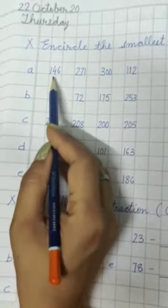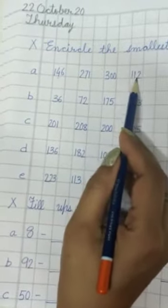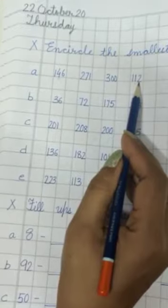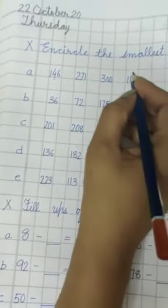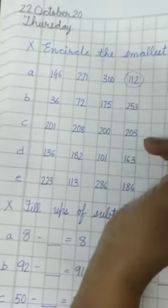We are going to check the second digit. This is 4, this is 1. So 112 is the smallest number. We are going to circle it.